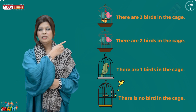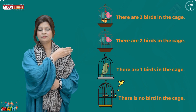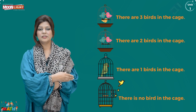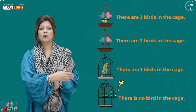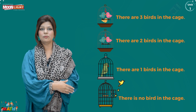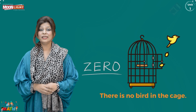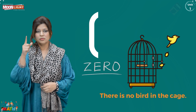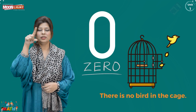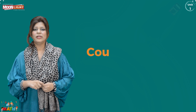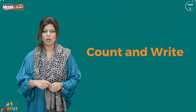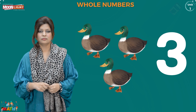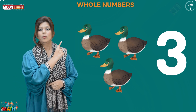If there is nothing in this cage, that means zero. Zero — we call it zero. Now let's watch these objects, count, and write the numbers. Look at these ducks: one, two, three ducks.